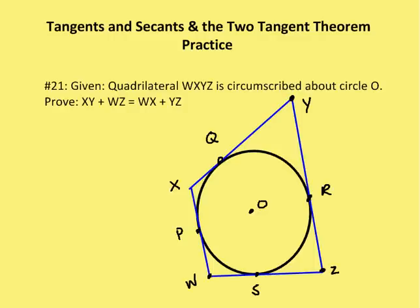Problem 21: I'm given quadrilateral WXYZ is circumscribed about circle O, and I'm going to prove that XY, this length here, plus WZ, this length here, is equal to WX, this length on the left-hand side, plus YZ.